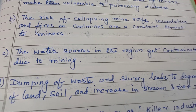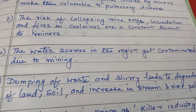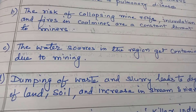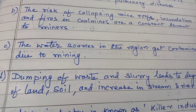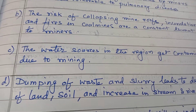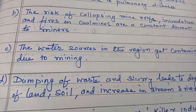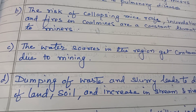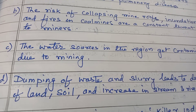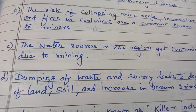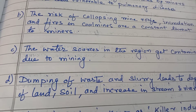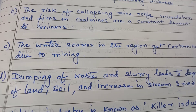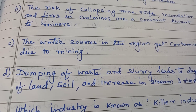The water sources in the mining region get contaminated due to mining. The dust particles flying in the air get settled over water sources — rivers, lakes, and ponds — and contaminate the water. If people consume that water, they are prone to various diseases.